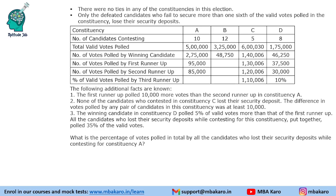Question 1: What is the percentage of votes polled in total by all candidates who lost their security deposit while contesting for constituency A? The top three candidates in A are not going to lose. Their combined votes are 4,55,000. So the remaining candidates together have 45,000 votes. All of them will lose their security deposit. Therefore 45,000 divided by 5,00,000 equals 9%. So 9% of votes were polled by candidates who lost their security deposit in A.